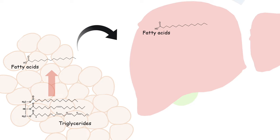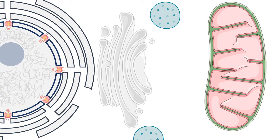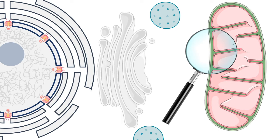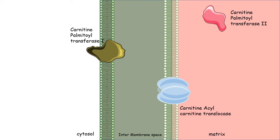Now let's look at the problem in the case of beta oxidation. Beta oxidation takes place in the mitochondria, but in order to start the process, the raw material — the fatty acid — needs to enter the mitochondria. The problem is that long-chain fatty acids such as palmitic acid cannot cross the mitochondrial membrane, as the membranes are impermeable to long-chain fatty acids. In this situation, a shuttle system is required, and that is the carnitine shuttle system.